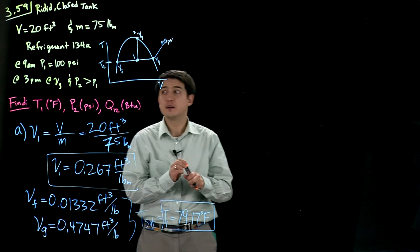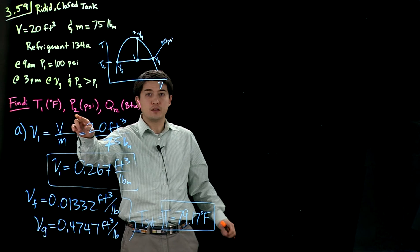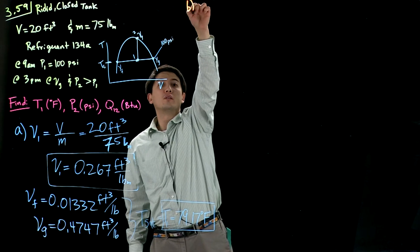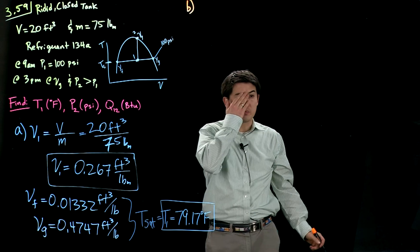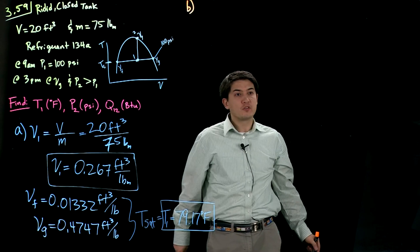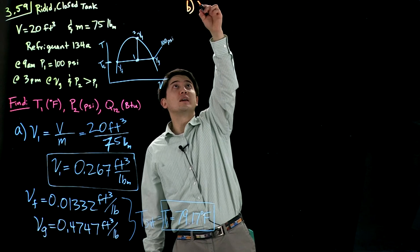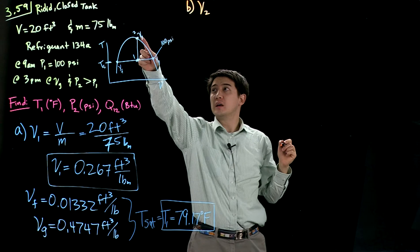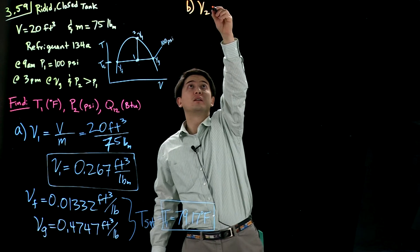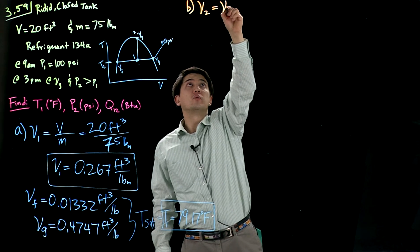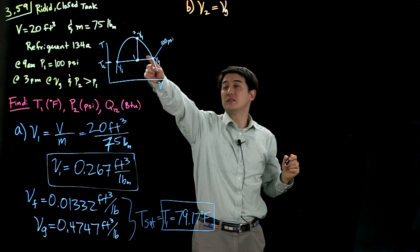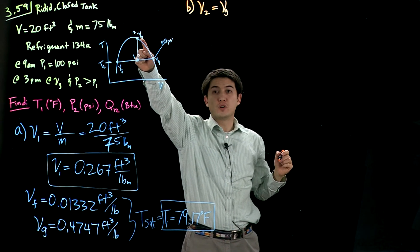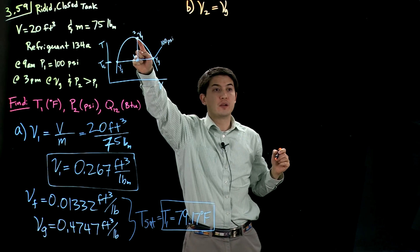Part B, we need to find the pressure here. So for part B, let's start off. We're going to say specific volume is going to be the same at both states. And we know we're told that it's the saturation of gas at state two.